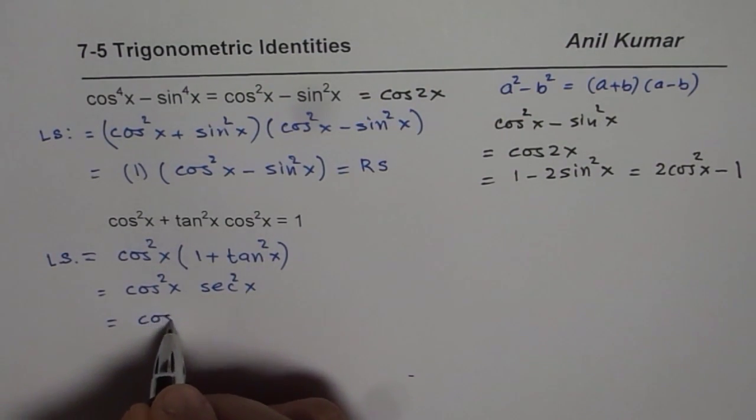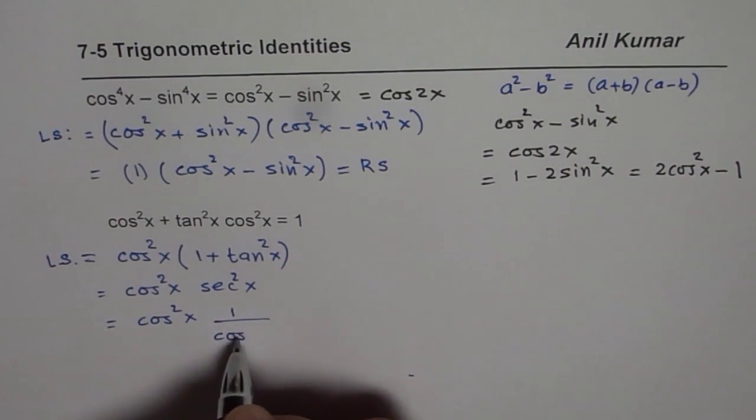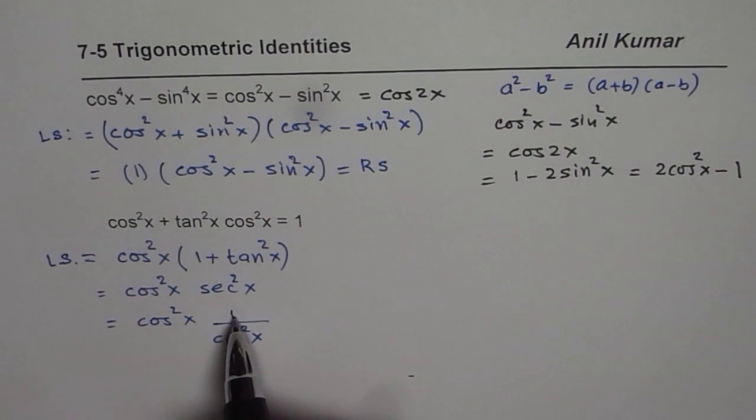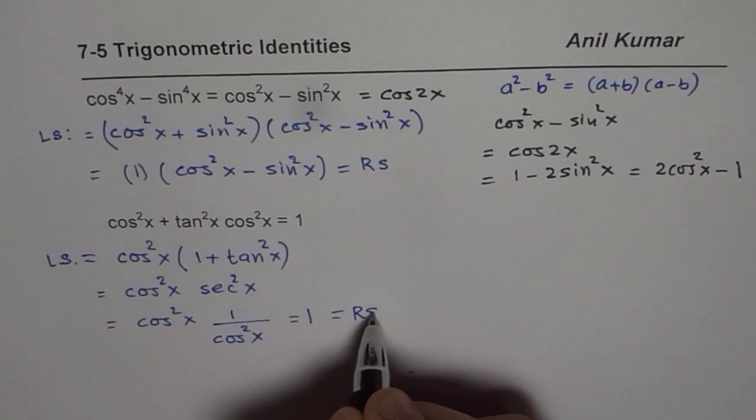But let me go one more step here to make it absolutely clear. Secant square x is 1 over cos square x. Now they cancel out and it equals to 1 which is equals to right side.